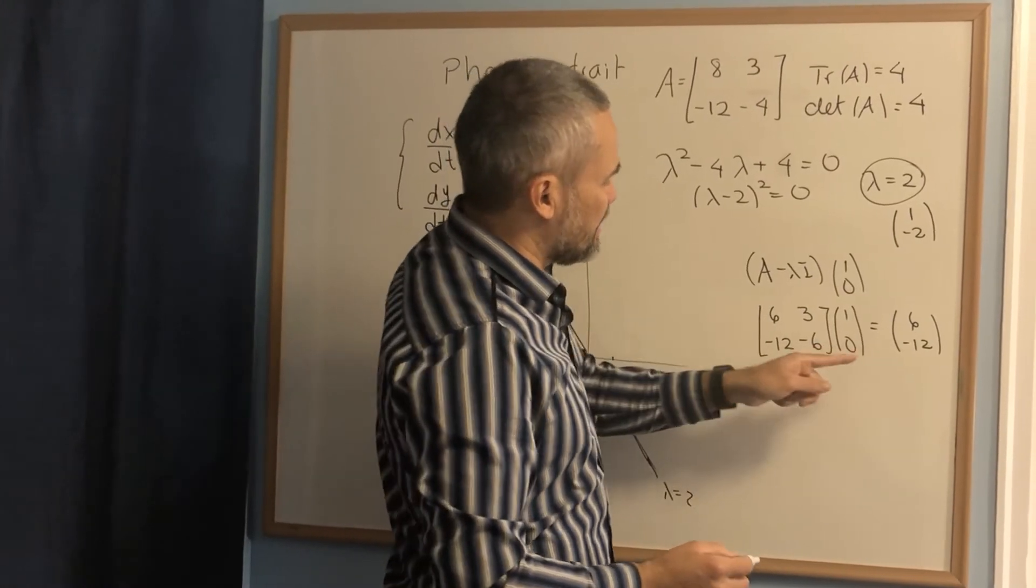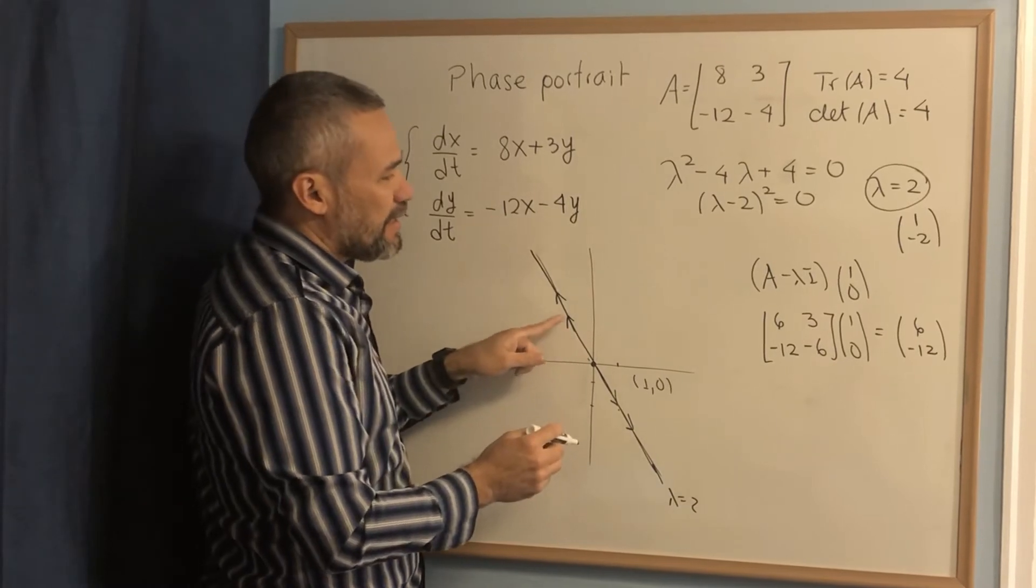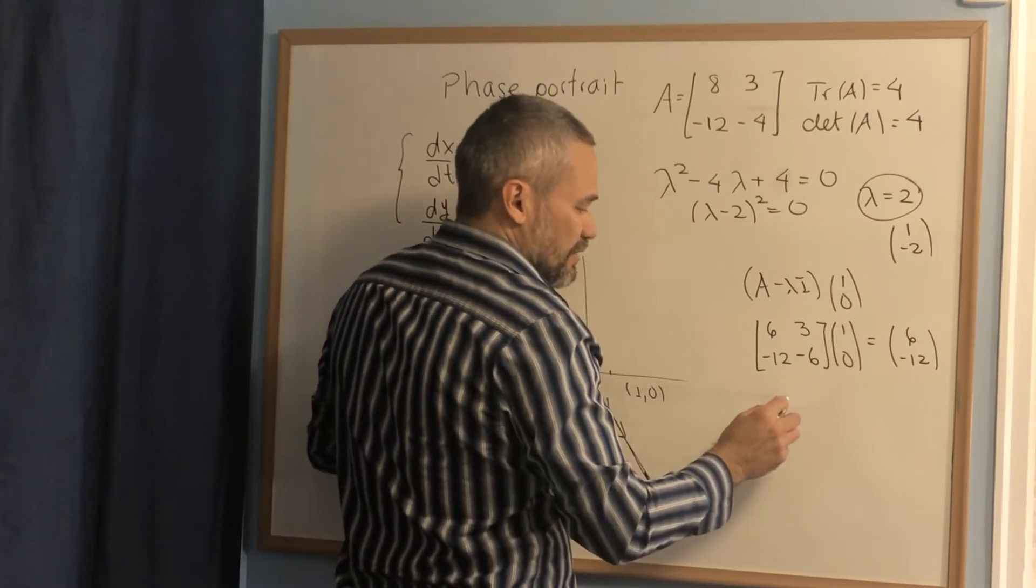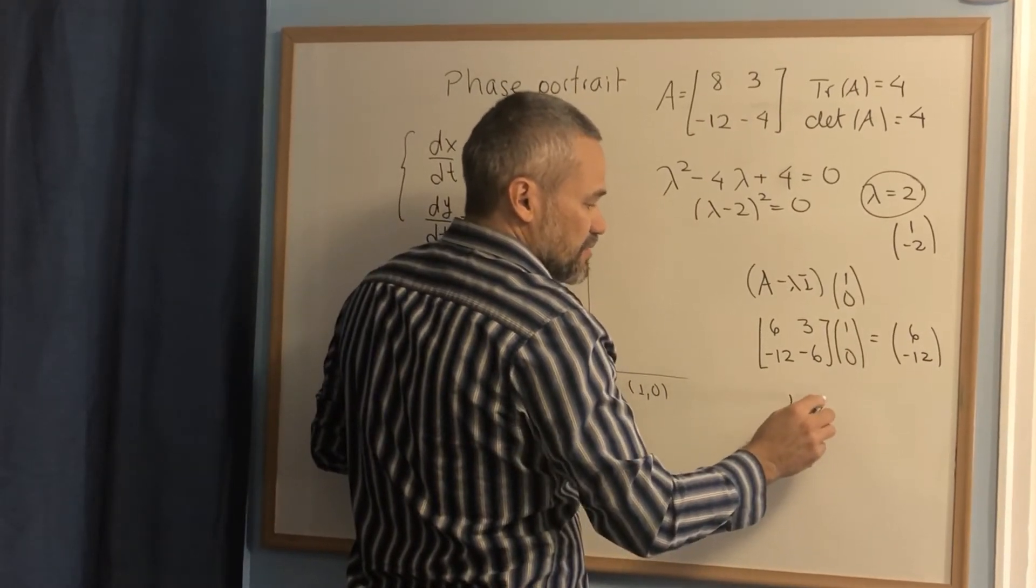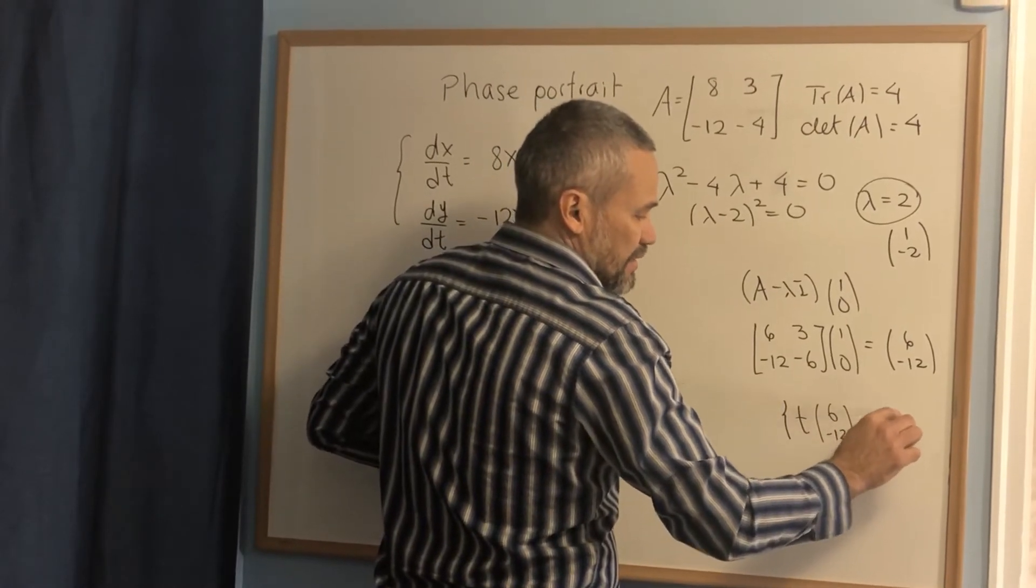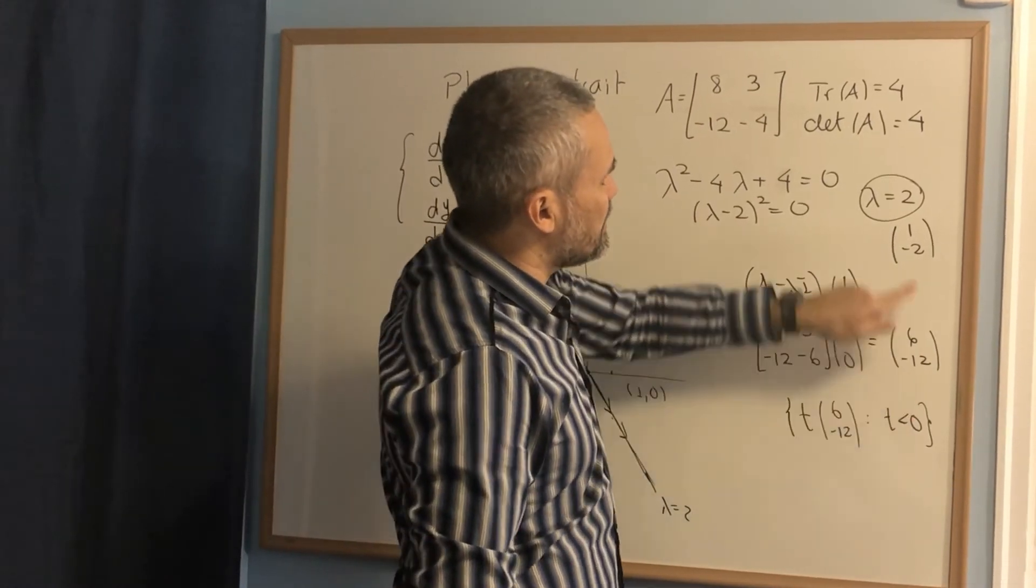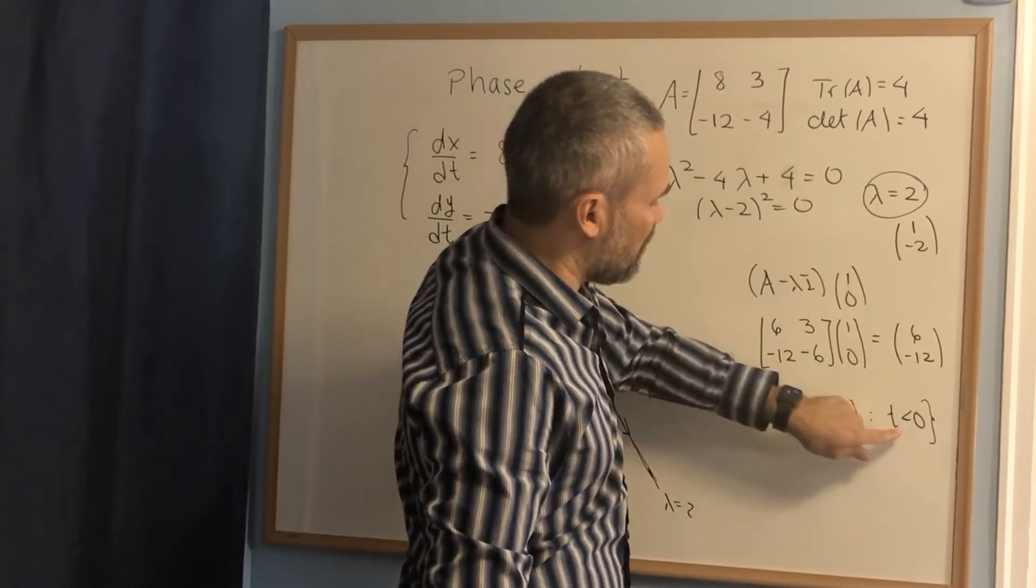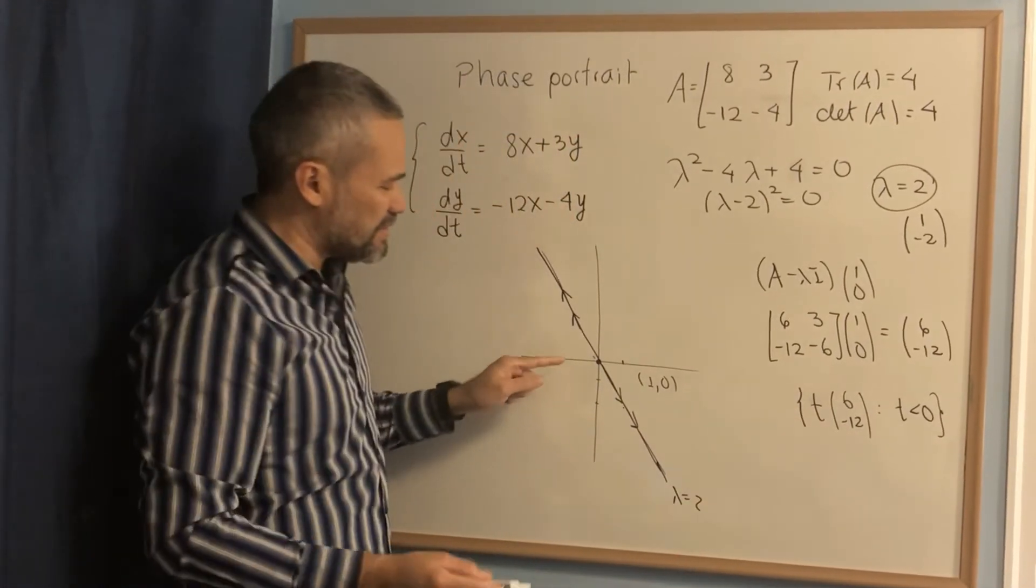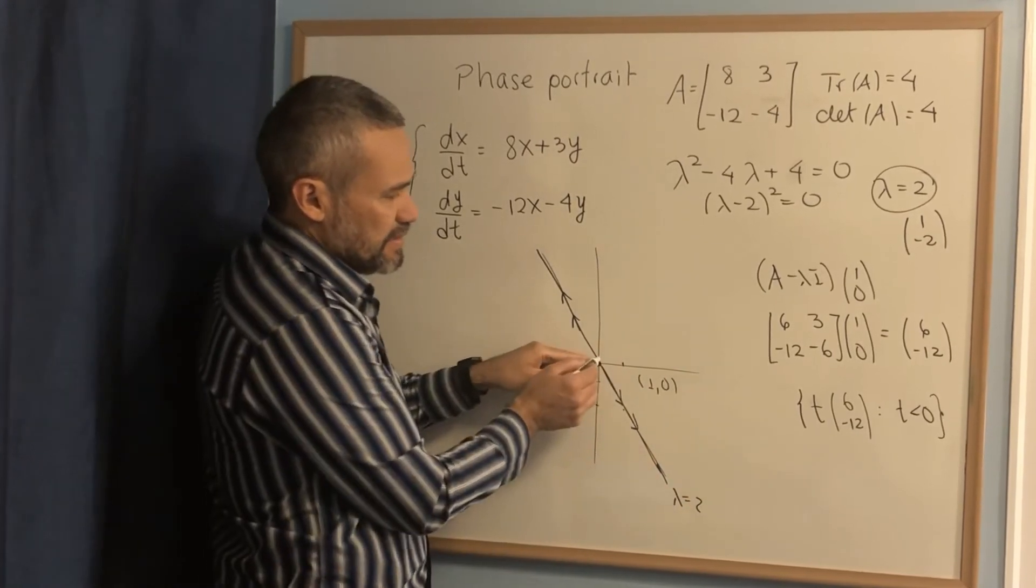The rule says that essentially the orbit near the origin is going to be tangent to this line. The line is going to be t times 6, negative 12, but the semi-line is when t is less than 0. The reason we pick t less than 0 is because lambda is positive. Let's see what is this semi-line. 6, negative 12 is this semi-line.